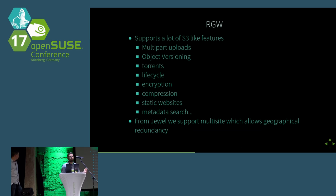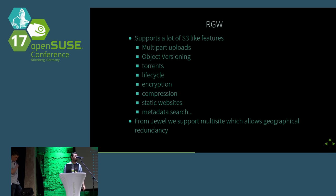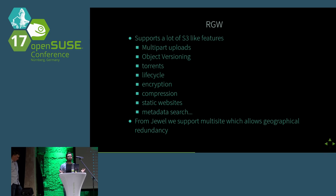We support a lot of S3-like features: multi-part uploads, object versioning, downloading objects as a torrent, encryption, compression, bucket and object life cycles. And more recently we started introducing metadata search with Elasticsearch. From the Jewel release — which is on Leap 42.2 — we support multi-site, which allows for geographical redundancy of object storage. We introduced asynchronous log shipping to remote sites so we can asynchronously replicate data to a remote Ceph cluster, and the Elasticsearch feature is built on top of that.